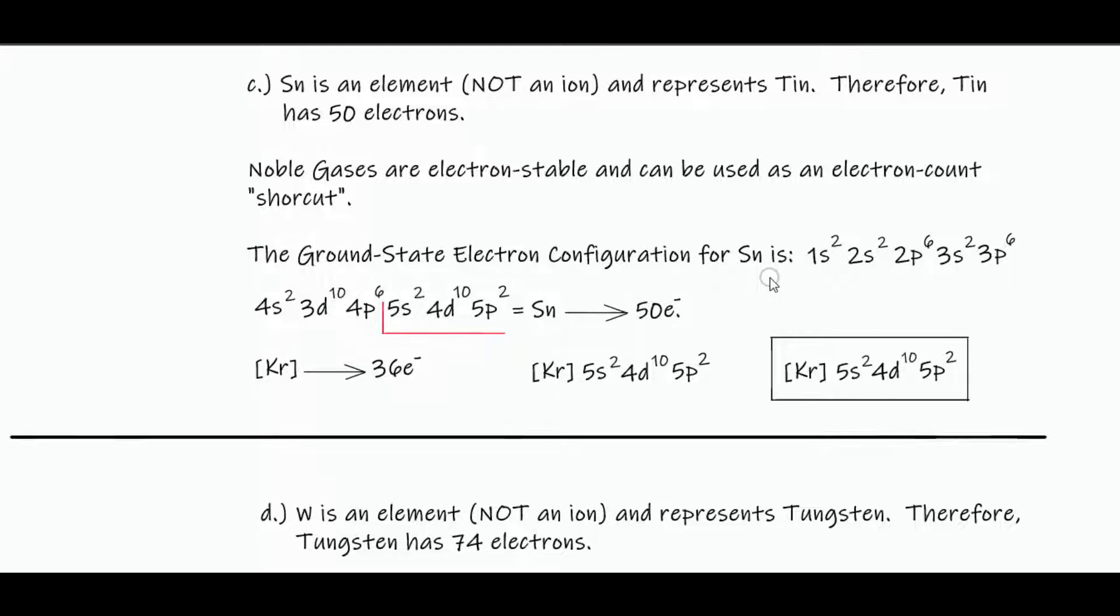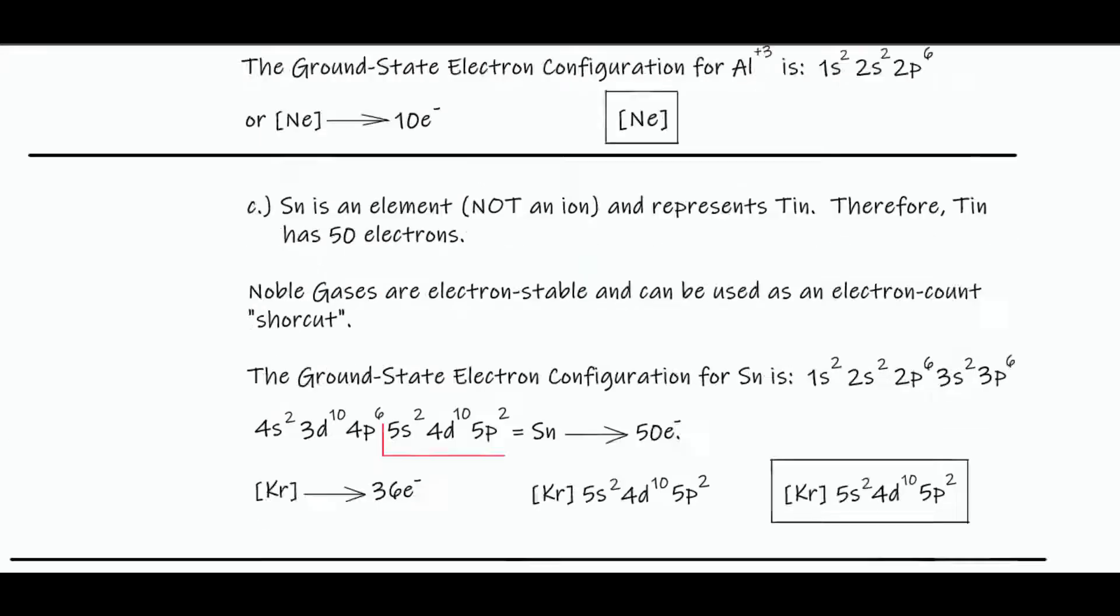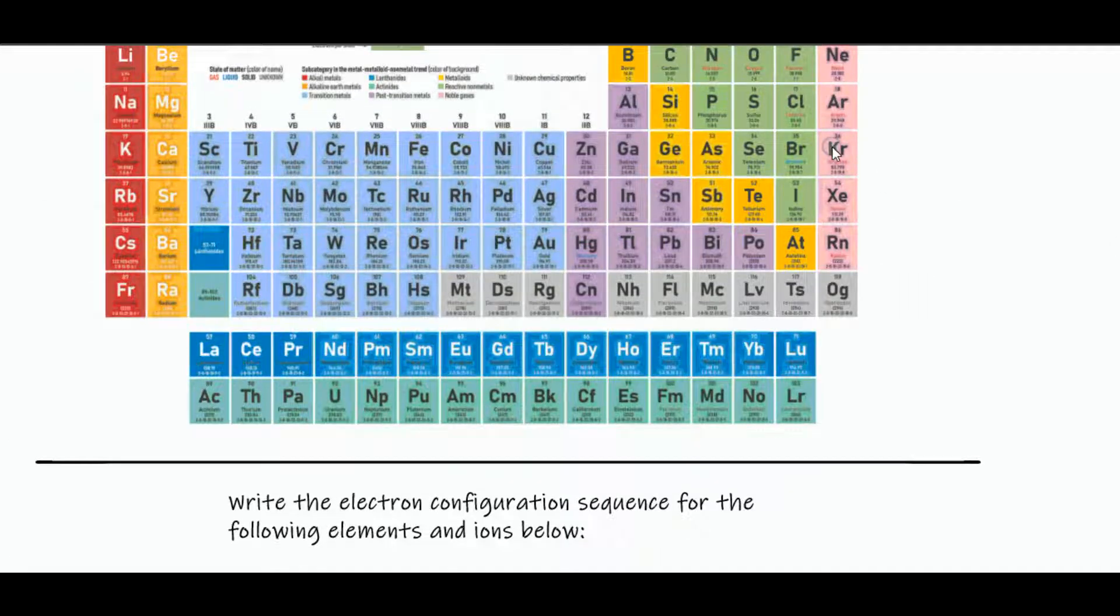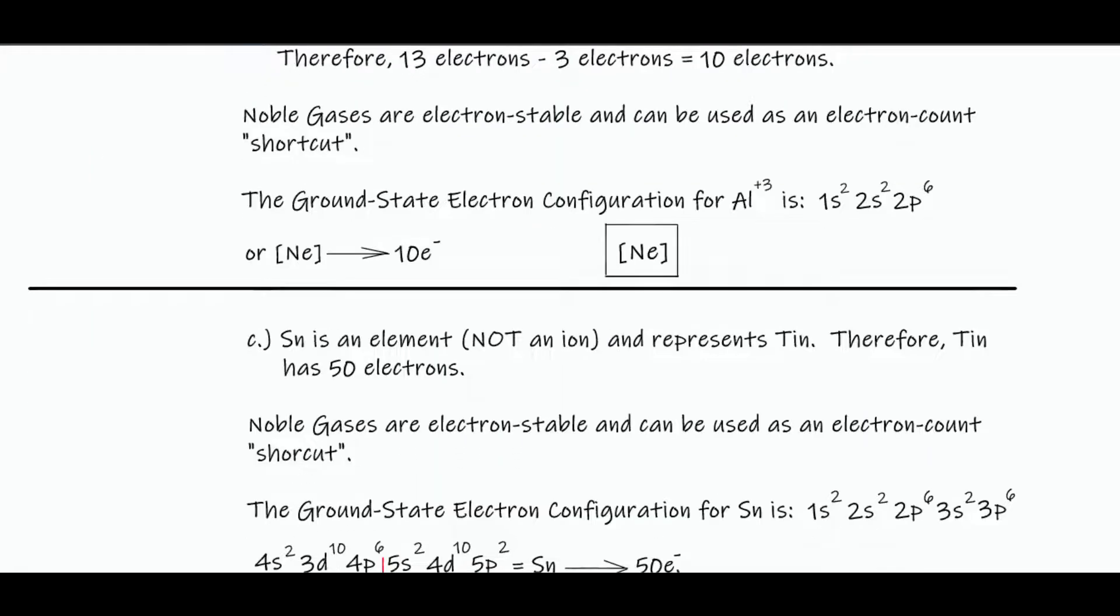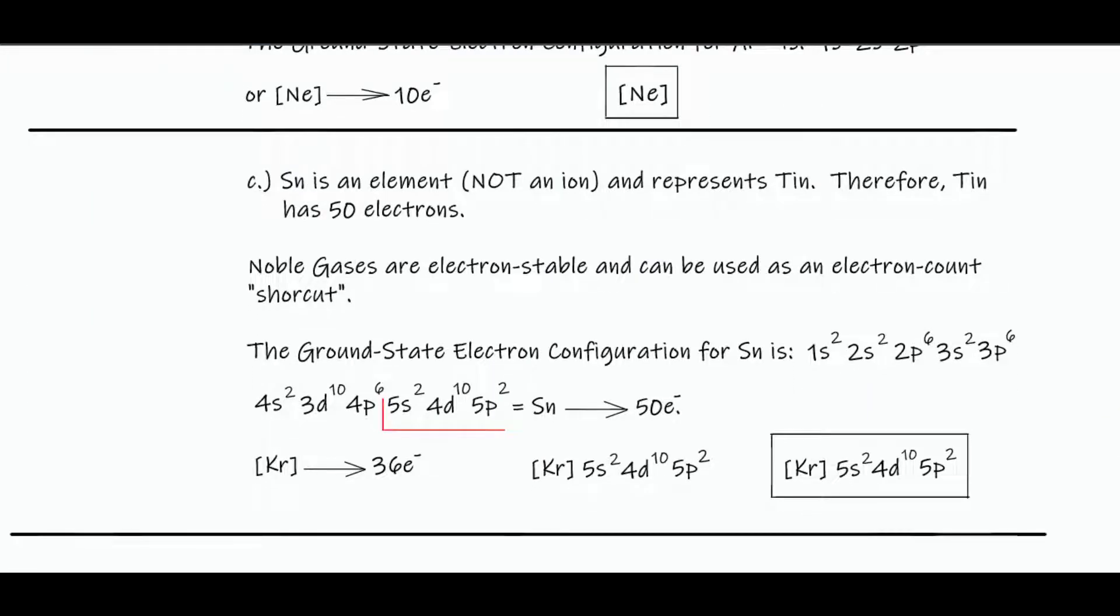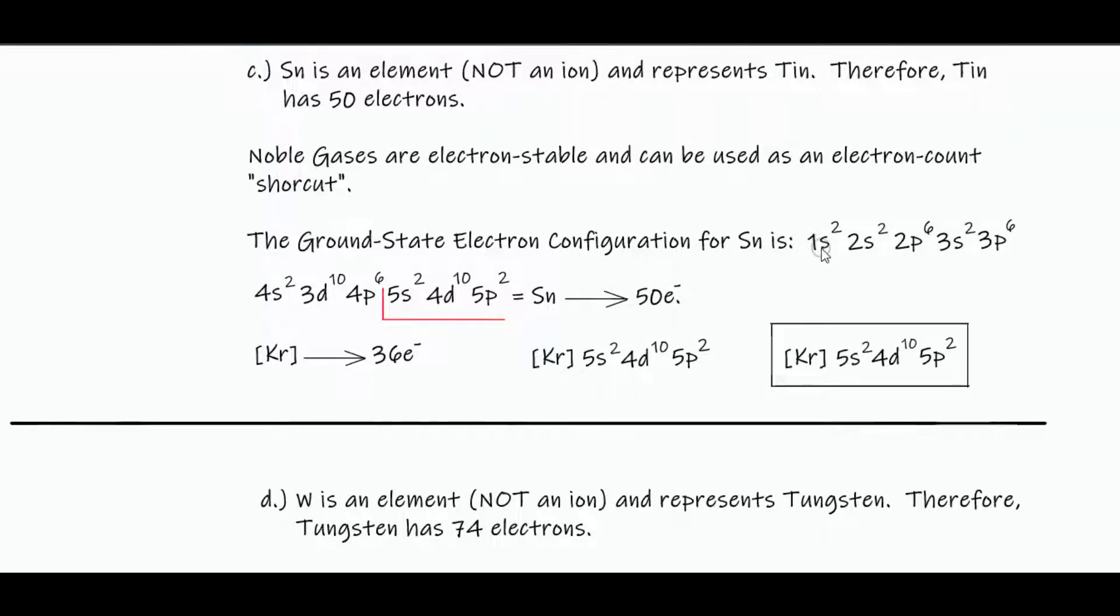So a better idea is to write the sequence for the noble gas first. So krypton is 36, so go ahead and solve as if it's for 36, not 50. So you go ahead and 1s2, 2, 4, 10, 12, 18, 20, 30, 36.